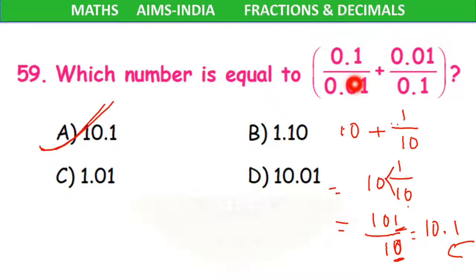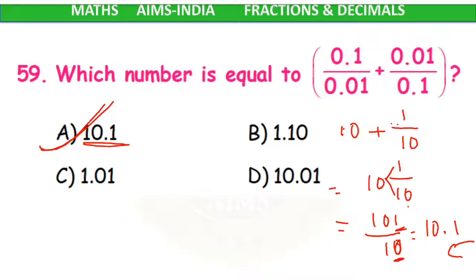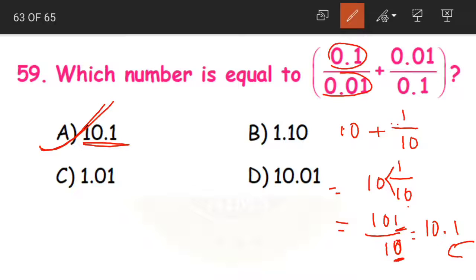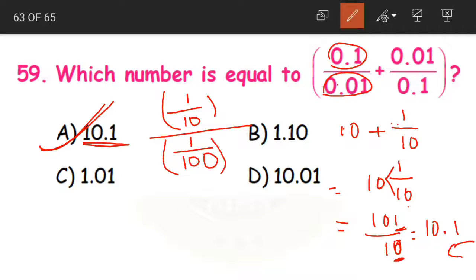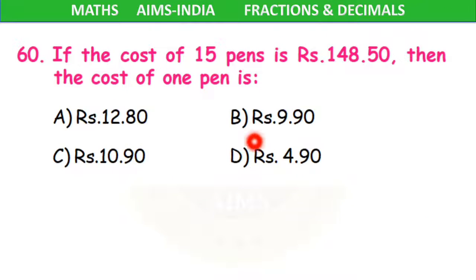That is option A. The question looks a little bit scary, but if you solve it carefully it is very easy. Option A, 10.1, is our correct answer. To summarize: we converted 0.1 to 1/10 and 0.01 to 1/100, divided to get 10, recognized the second fraction as the reciprocal giving 1/10, and added them to get 10.1.